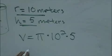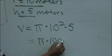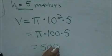So we're going to go ahead and simplify it. So we have pi times 100 times 5. So we end up with 500 pi.